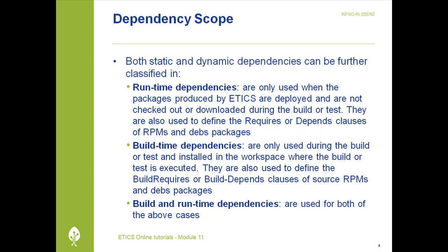Dependencies also have different scopes. Both static and dynamic dependencies can be further classified as runtime dependencies, which are only used when the packages produced by the Ethics system are deployed and are never checked out or downloaded during the build or test. Dependencies are in this case used to define the requires or depends clauses of RPMs and Debian packages. In addition, dependencies can be both build and runtime dependencies.